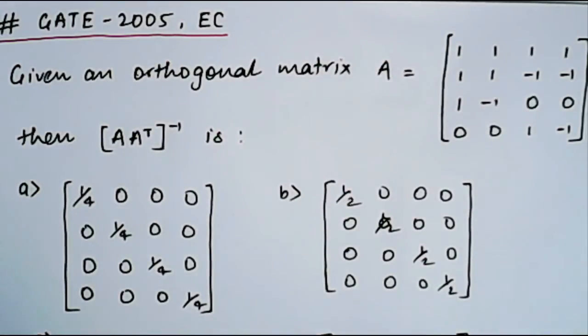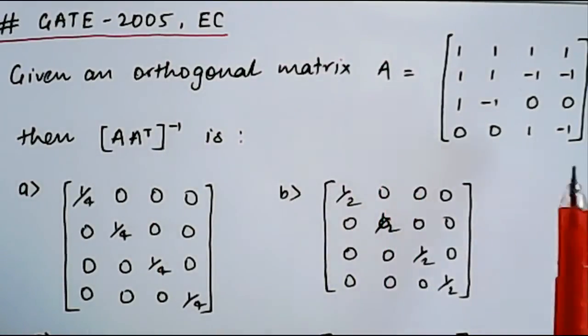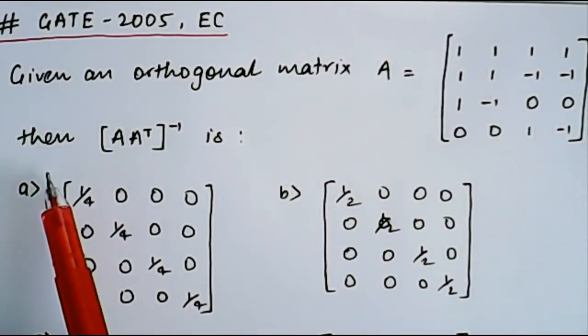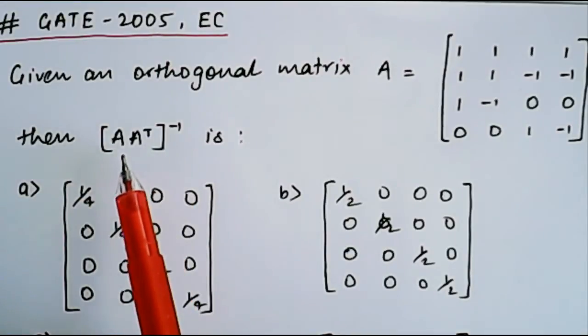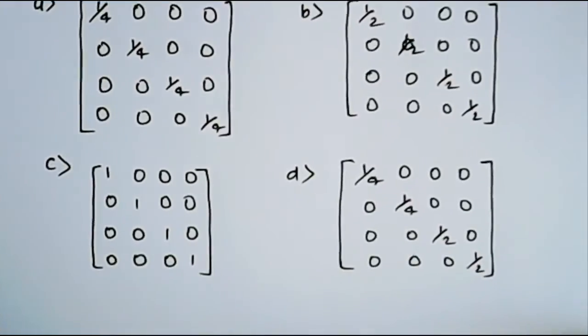So the question was: given an orthogonal matrix A, then find out [AA^T]^(-1), A multiplied by transpose of A whole inverse. We have given four options.